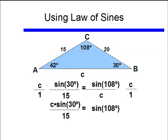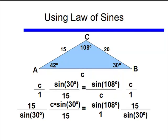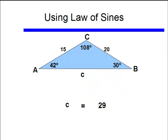Now if I multiply both sides by 15 over sine of 30 degrees, my left-hand side will give me just C. Again, if I put that into my calculator, I end up with C equaling or approximately equaling 29.